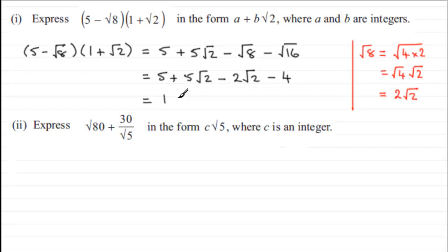And grouping up our terms, we've got 5 minus 4, which is 1, and then we've got 5 root 2 take away 2 root 2, which is going to be plus 3 root 2. And you can see we've got that in this form a plus b root 2, where a and b are integers. If we asked what a was, it would be 1, and b would be an integer as well, it would be the 3 here.